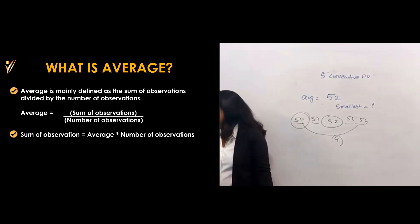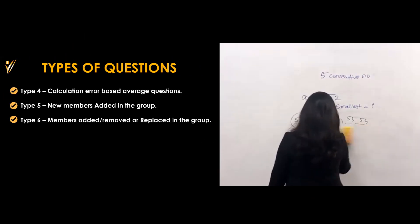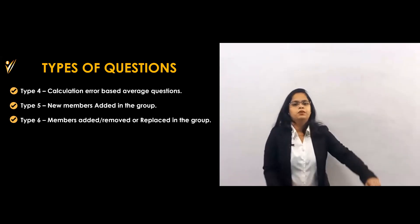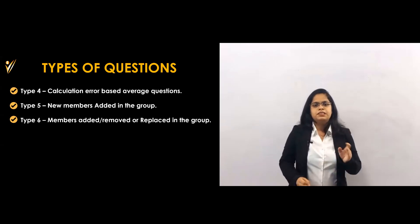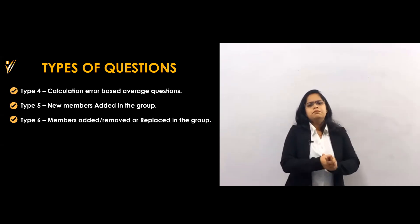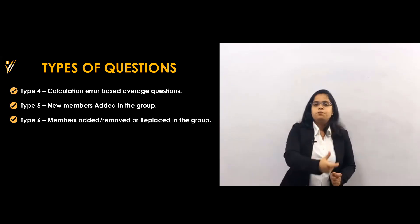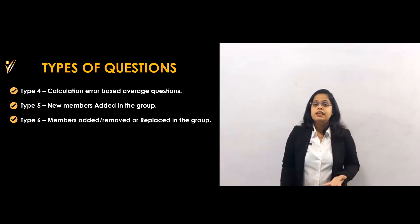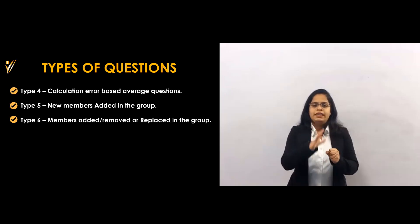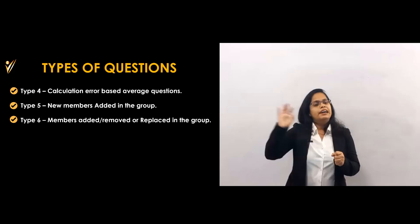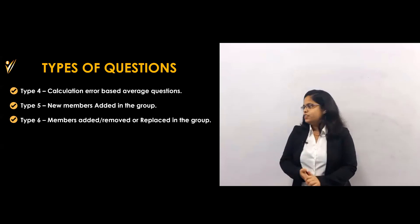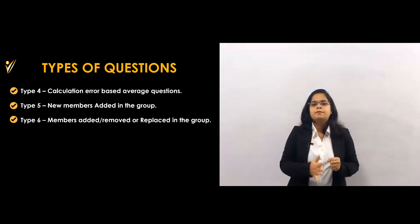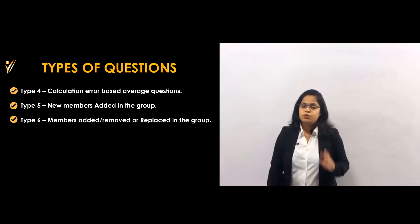Now let's go for type number 4, 5, and 6. Type 4 is calculation error based questions — sometimes when writing numbers for addition, we write a wrong number by mistake, for example 25 instead of 52. Type 5 is when a new member is added to the group. Type 6 is when a member is replaced by another. Let's go for type 4 first.